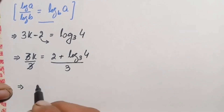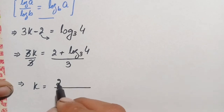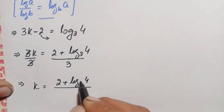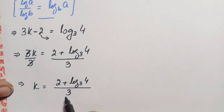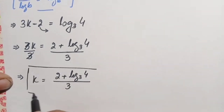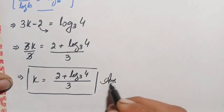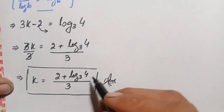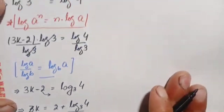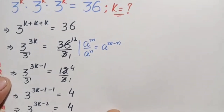The value of k is: k equals (2 plus log base 3 of 4) divided by 3. We will now verify whether this is the exact and correct value of k in this exponential math problem.